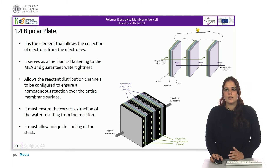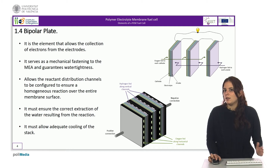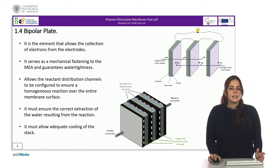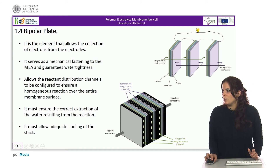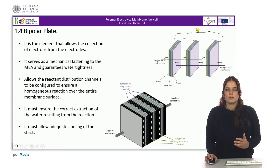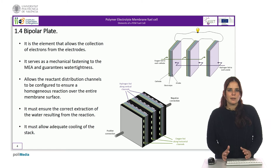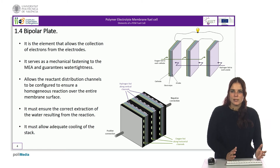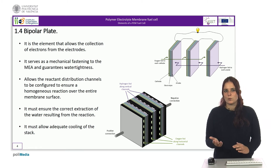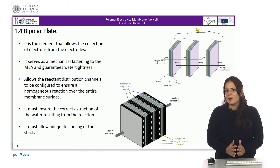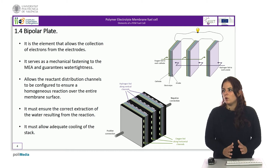We can observe that oxygen is supplied at the cathode and hydrogen at the anode. The simplest way to form a compact stack is shown in the figure, where the pieces that allow gas to be channeled from one side to the other are cast in one piece and therefore called bipolar plates, because the same piece is the positive electrode in one cell and the negative in the next.